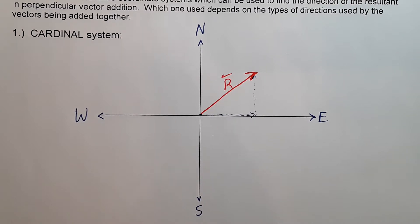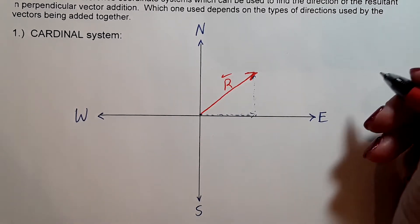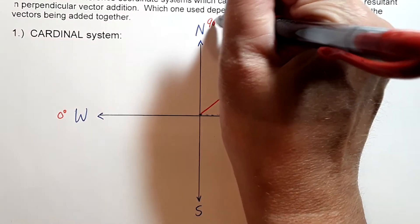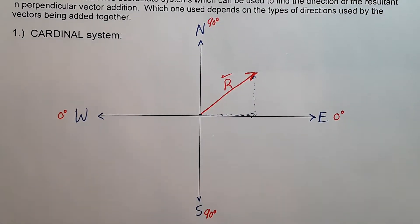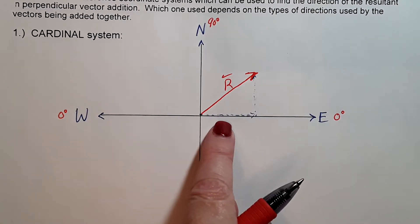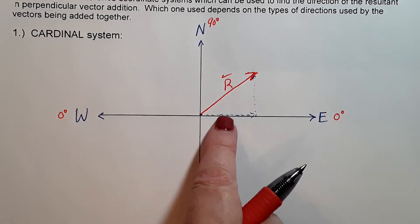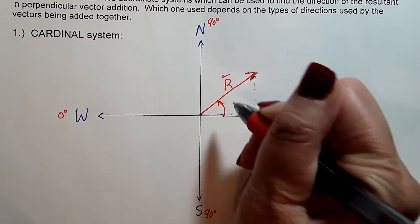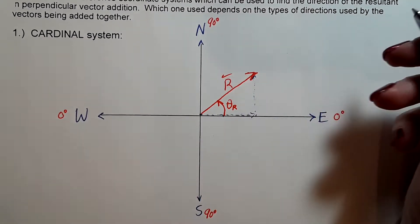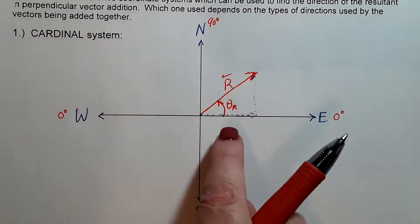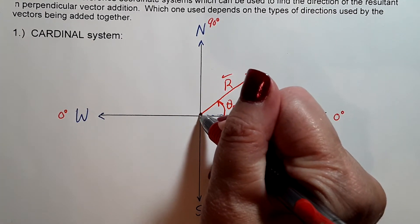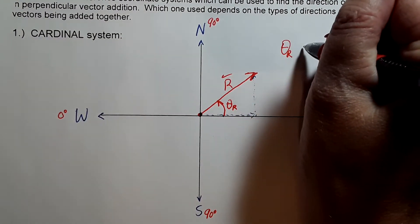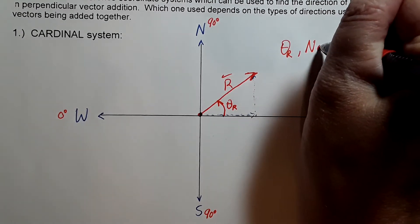Whenever we reference the direction, east and west are both zero degrees. North is 90 degrees and south is 90 degrees. We always start at zero, meaning we always start at the closest horizontal axis. For quadrant one, the closest horizontal axis is the east axis. So we're going to start at east and measure northward — north of the east axis. Put your resultant on the origin of the axis, and we measure theta-r as so many degrees north of east.